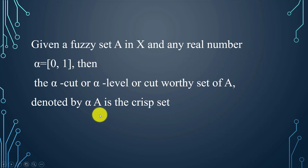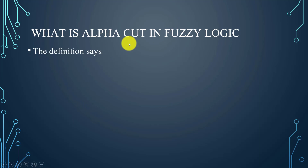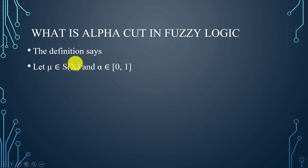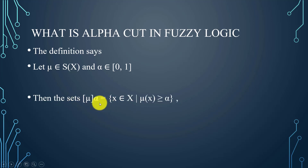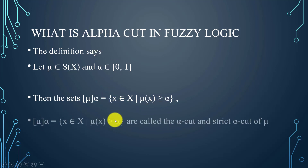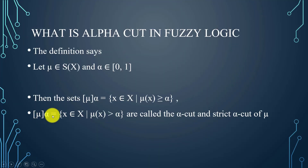According to the formal definition, let mu be the membership function of set X — the universal set — and alpha belongs to the interval [0, 1]. Alpha is a real number in the range 0 to 1. The condition to find the alpha cut membership value is: for all x belonging to universal set X, mu of x must be greater than or equal to alpha. When this condition holds, it becomes an alpha cut. If it is strictly greater than alpha (not equal), it is called a strict alpha cut.